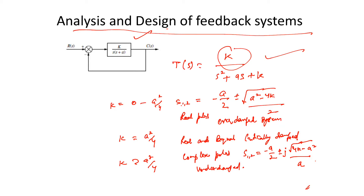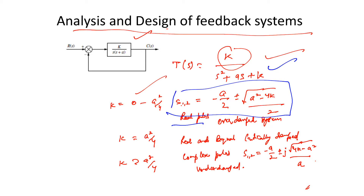The pole moves through the three ranges of operation: overdamped, critically damped, and underdamped. If the value of K is between 0 and a²/4, the poles of the system are real. These poles can be obtained by solving the characteristic equation, and the response is overdamped.